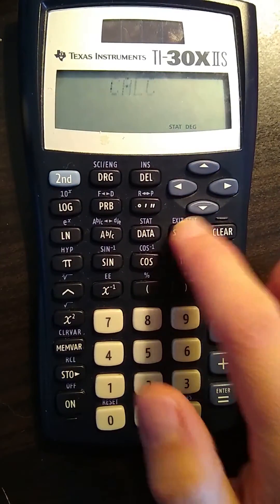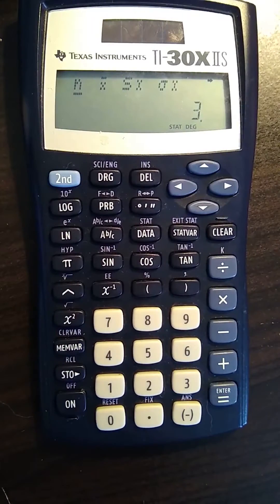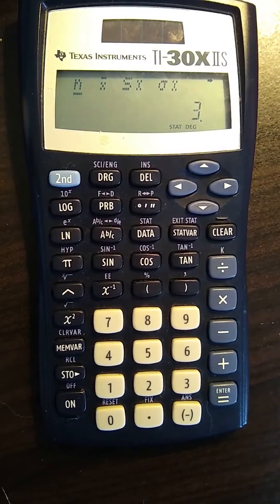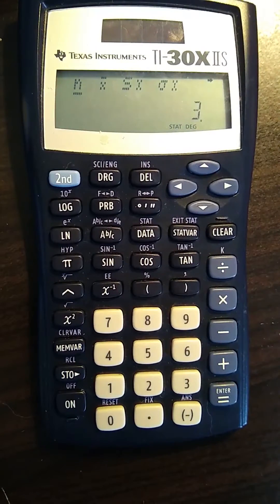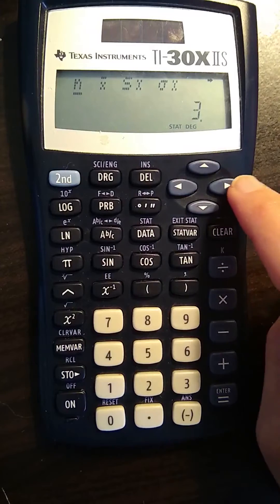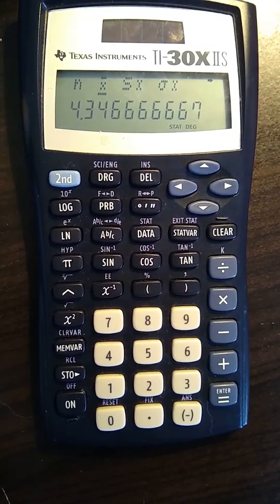So I'm going to press stat var and it's going to show me this screen. Right now the N is underlined. That's the number of data points in our list that we're going to find the average and standard deviation for. If I press the over button, this is going to show me x bar or the average.